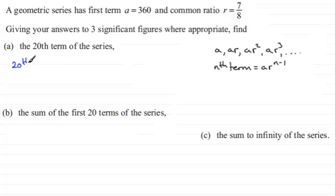The 20th term is going to be equal to a, the first term which we're told is 360, multiplied by the common ratio 7/8, and that is raised to the power n minus 1. We're looking for n being 20 here, so 20 minus 1 takes us down to 19.